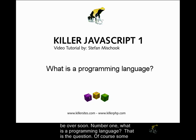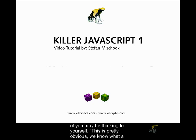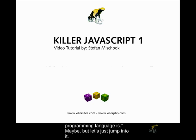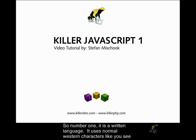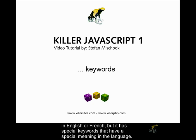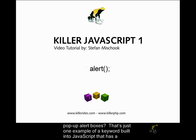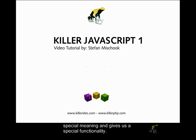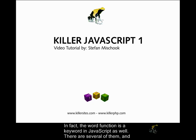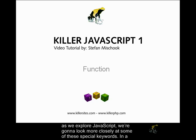So number one: what is a programming language? Some of you may be thinking this is pretty obvious. It is a written language — it uses normal Western characters like you see in English or French, but it has special keywords that have a special meaning in the language. For example, in our last video we learned about the alert function, those pop-up alert boxes. That's just one example of a keyword built into JavaScript. In fact, the word 'function' is a keyword in JavaScript as well, and there are several of them.